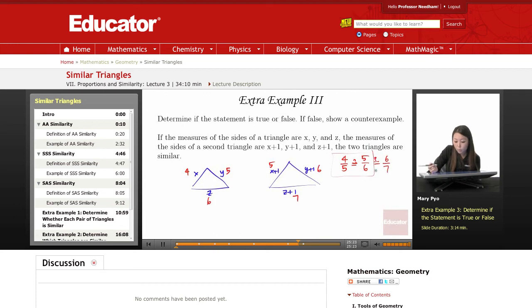Proportions, a correct proportion would be that this ratio is equal to this ratio. So we're going to see if that works. So then cross products, 4 times 6 is 24 equal to 25. No, they're not equal.